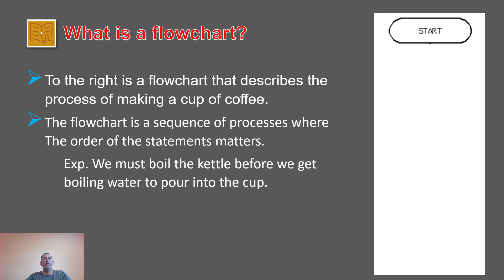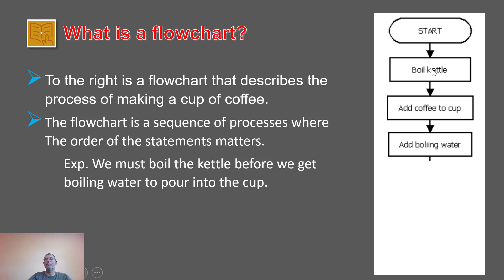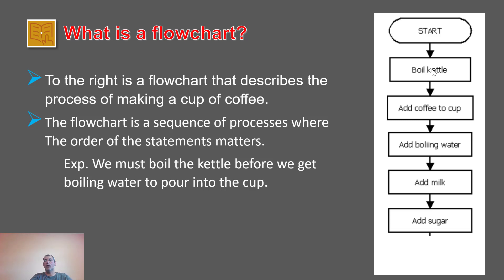So what is a flowchart? To the right is a flowchart that describes the process of making a cup of coffee. The flowchart is nothing but a sequence of statements and orders — from boiling water in the kettle, adding coffee to a cup, adding boiled water. Those statements go in order; you cannot add water until you heat it up. That is basically what a flowchart is.